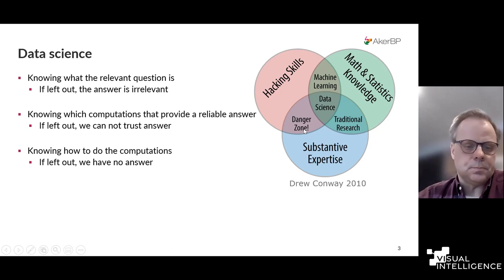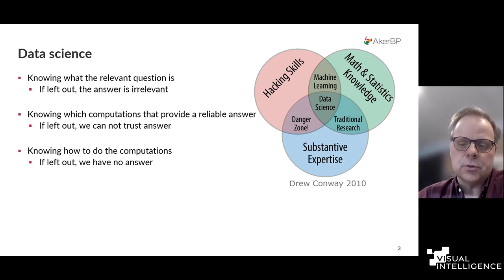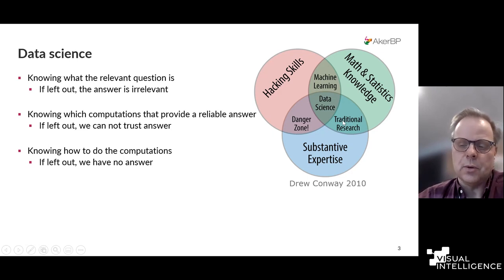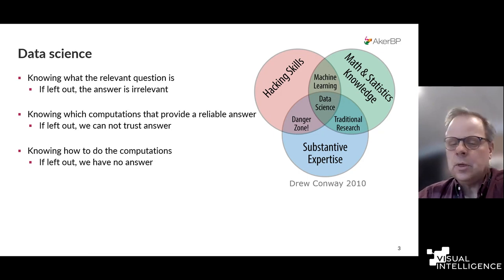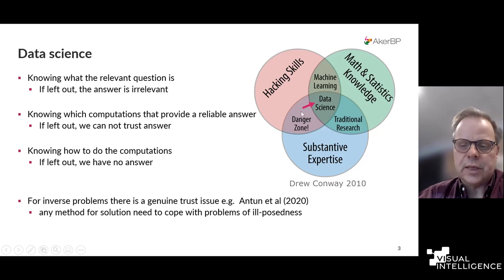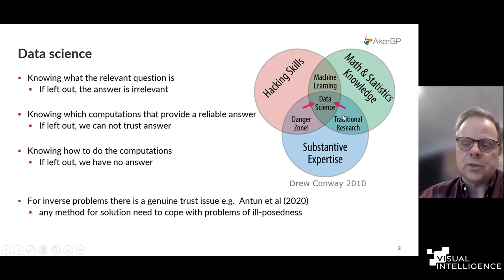On the other side, if you don't have the proper methodology, you really can't trust the answer you come up with. The kind of problems I most often have is that we are in the traditional research space where we don't have the ability to actually compute the answer. We know what we wonder about and we know how we would like to compute it, but we are not able to do the computations. For inverse problems, which I will talk about today, we are trying to come from this danger zone into the data science zone.